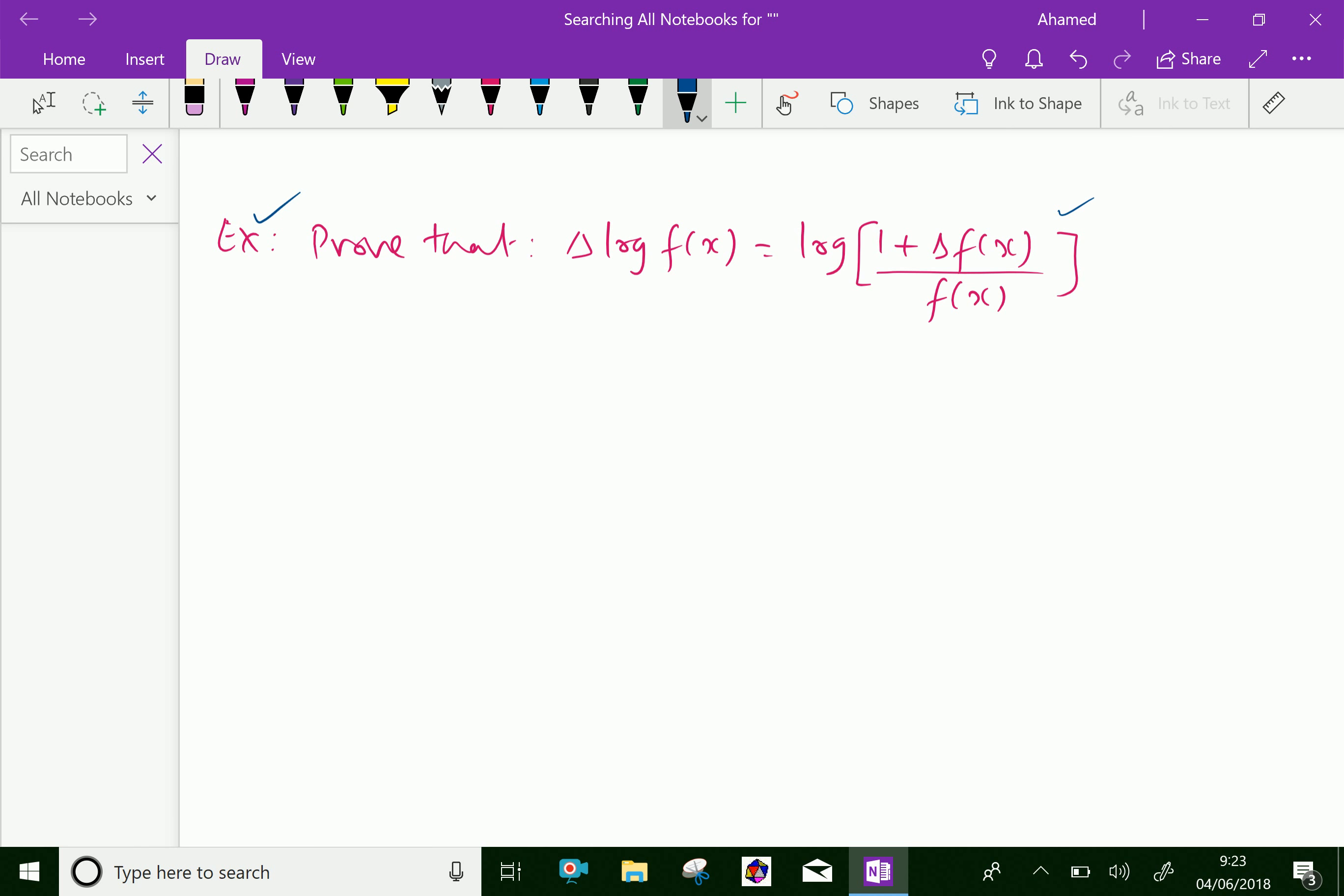Now, delta log of f of x equals by definition log of f of x plus h minus log of f of x, where h is the interval of differencing.